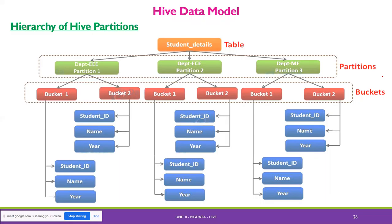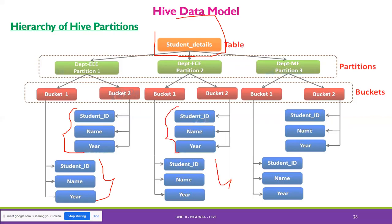This is the overall hierarchy of the Hive data model: table, partition, and bucket. For example, a student details table would be the overall table; the partitions could be mathematics department, computer science department, commerce department; and within each partition you have bucket values - individual data files. This is what the Hive data model looks like for processing, analyzing, and querying data.